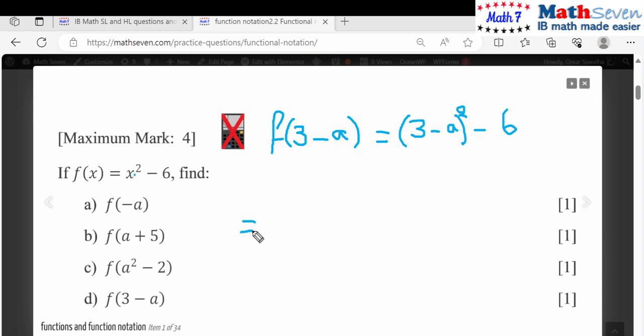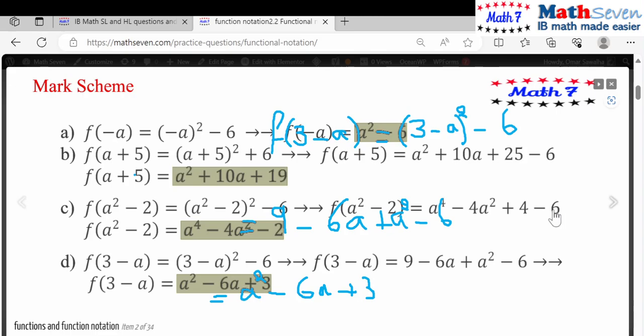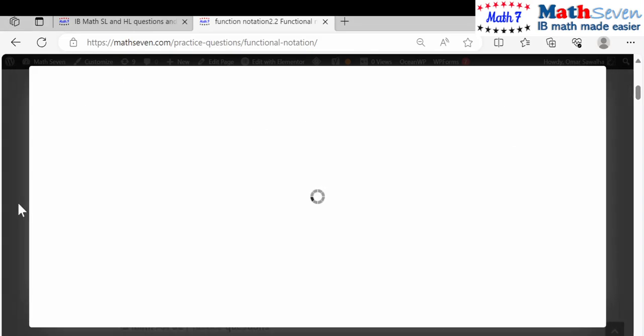Now expand this. This will become 9 minus 6a plus a squared minus 6, which gives a squared minus 6a plus 3. We're done. Check your answer, a squared minus 6a plus 3, done.